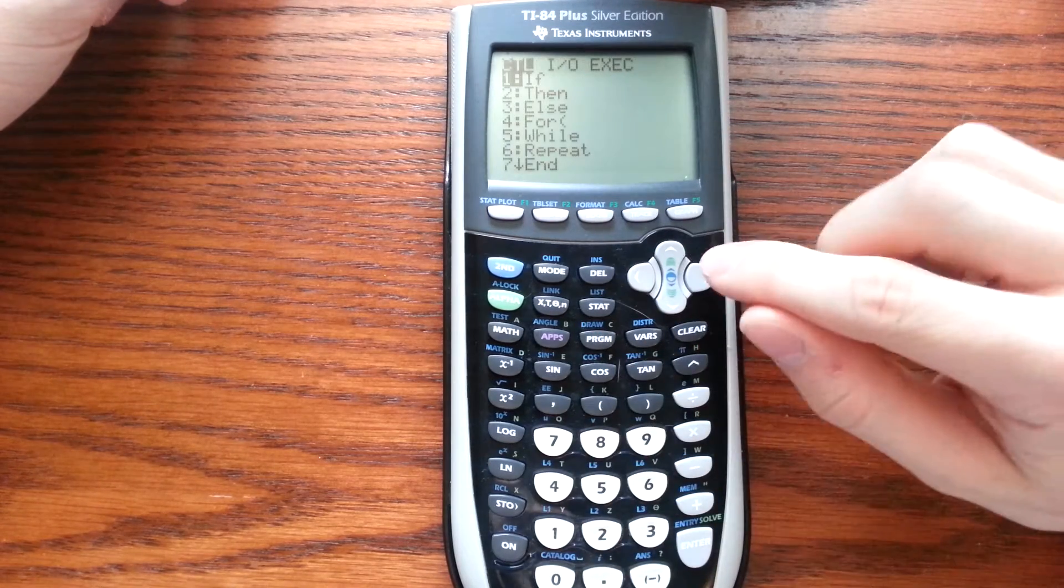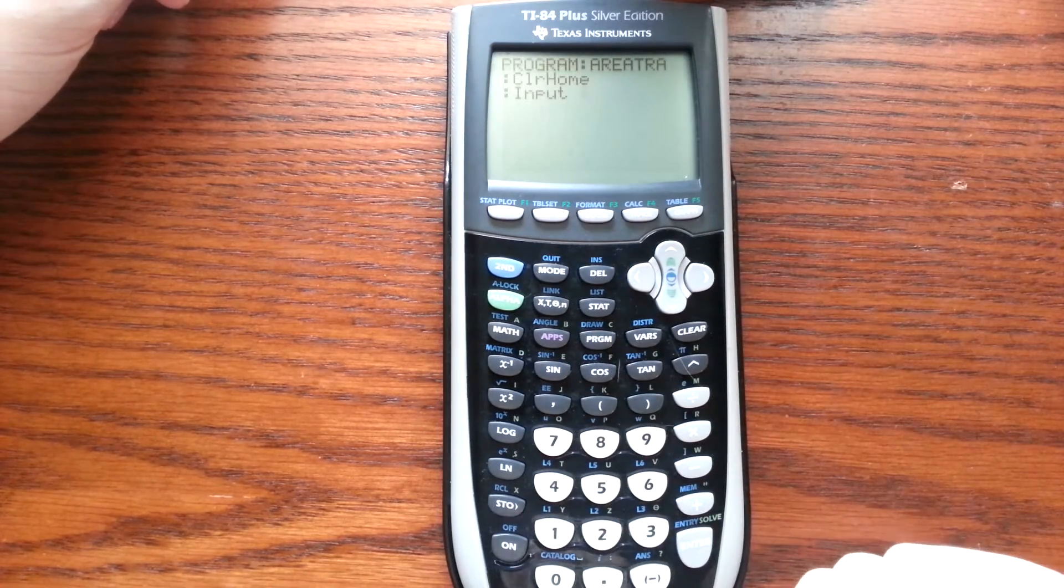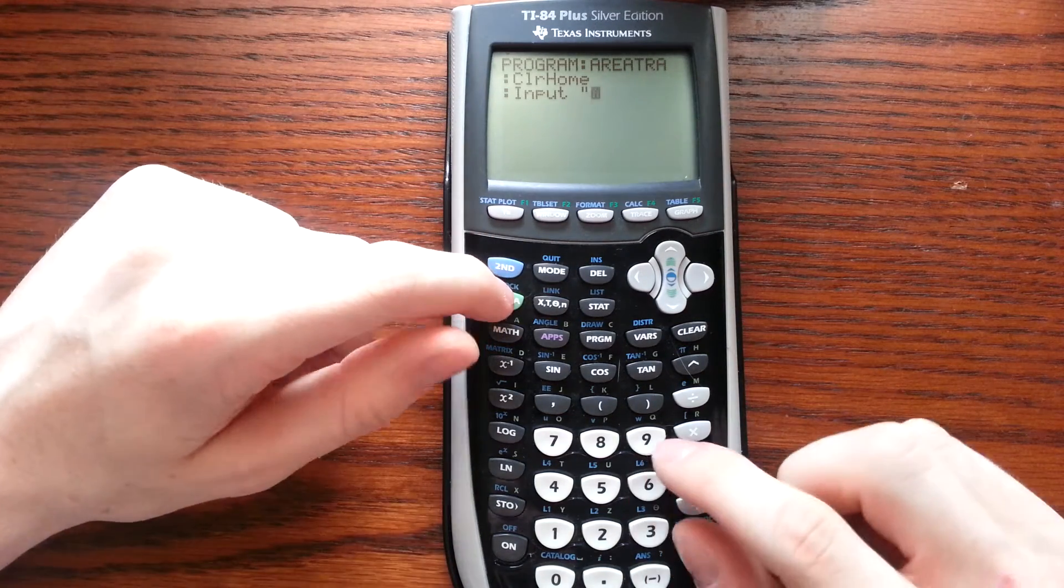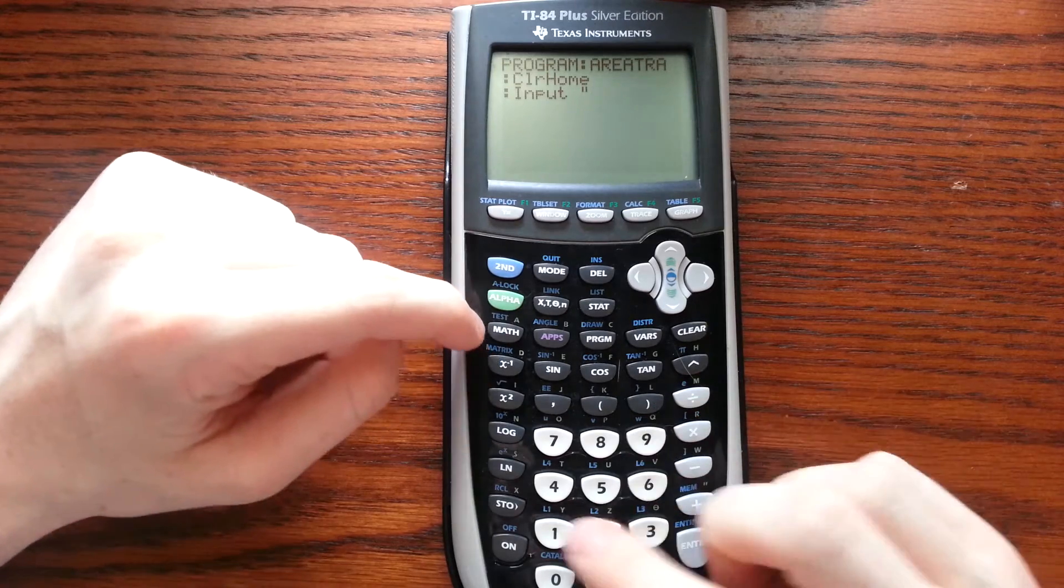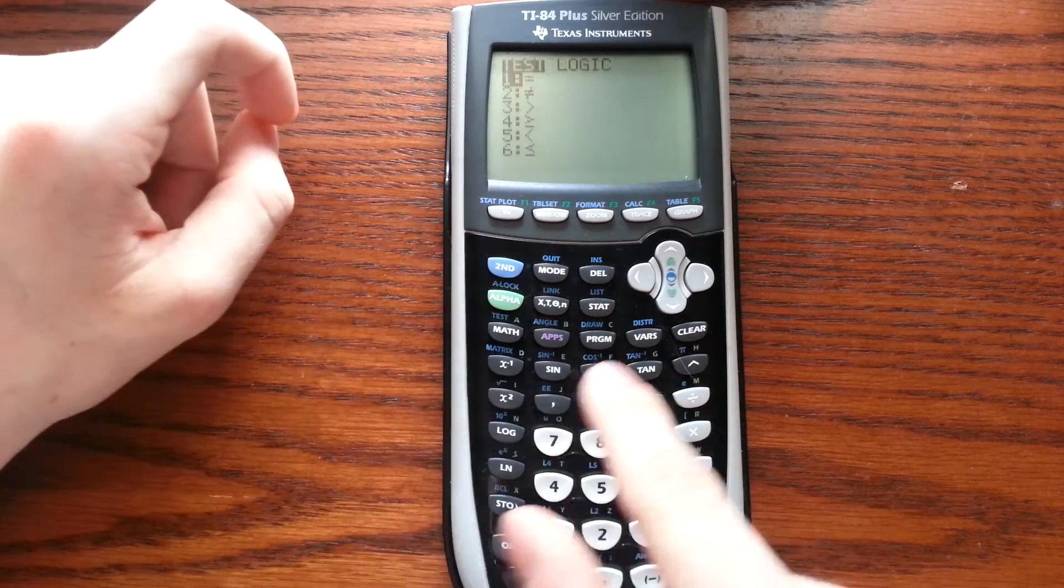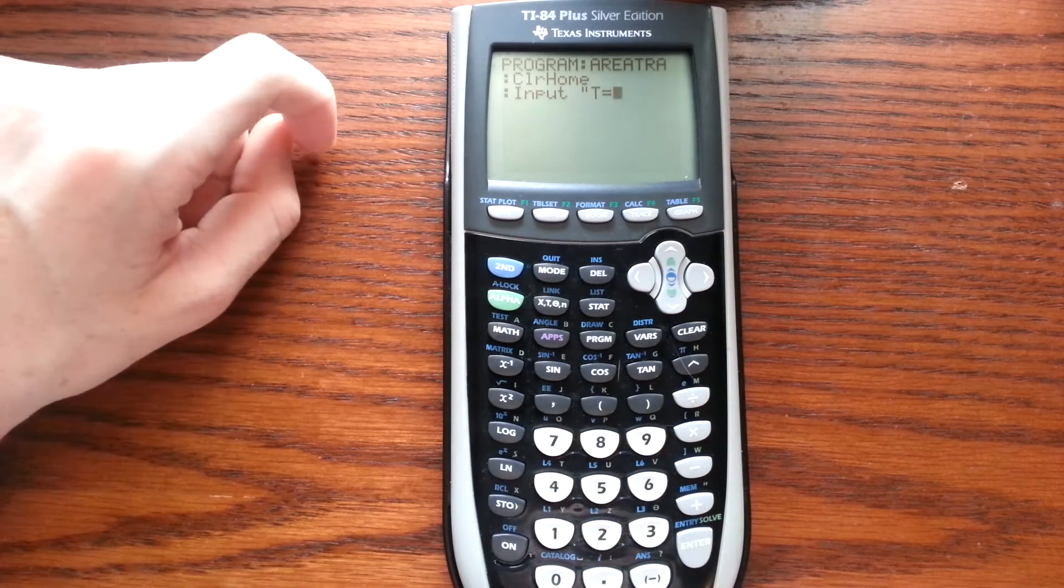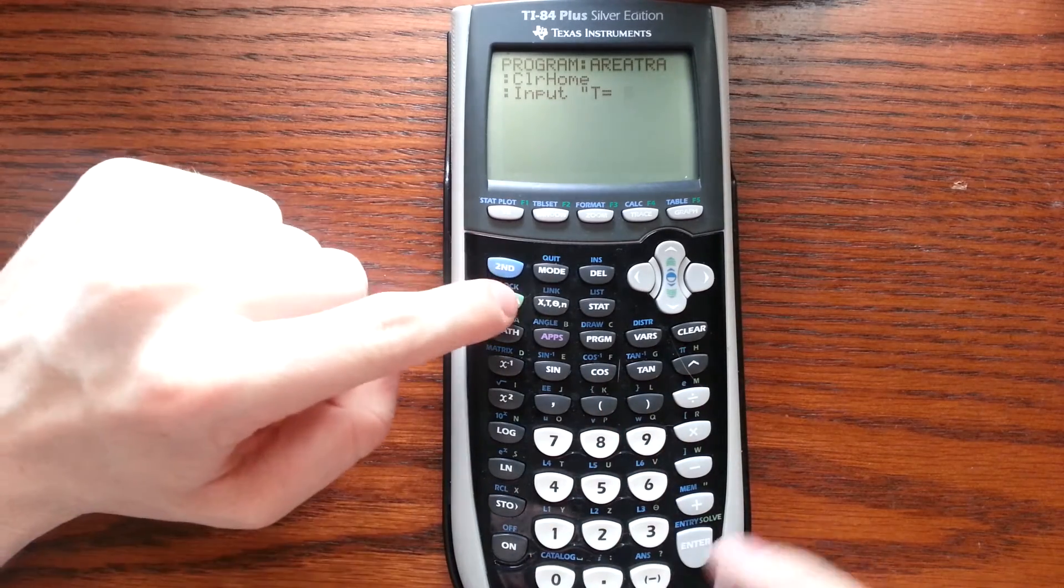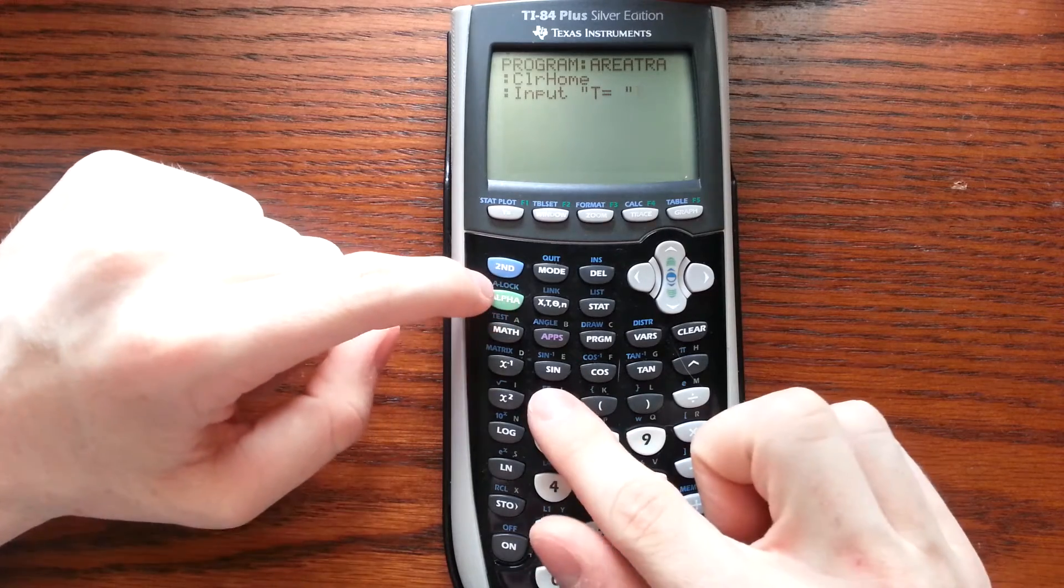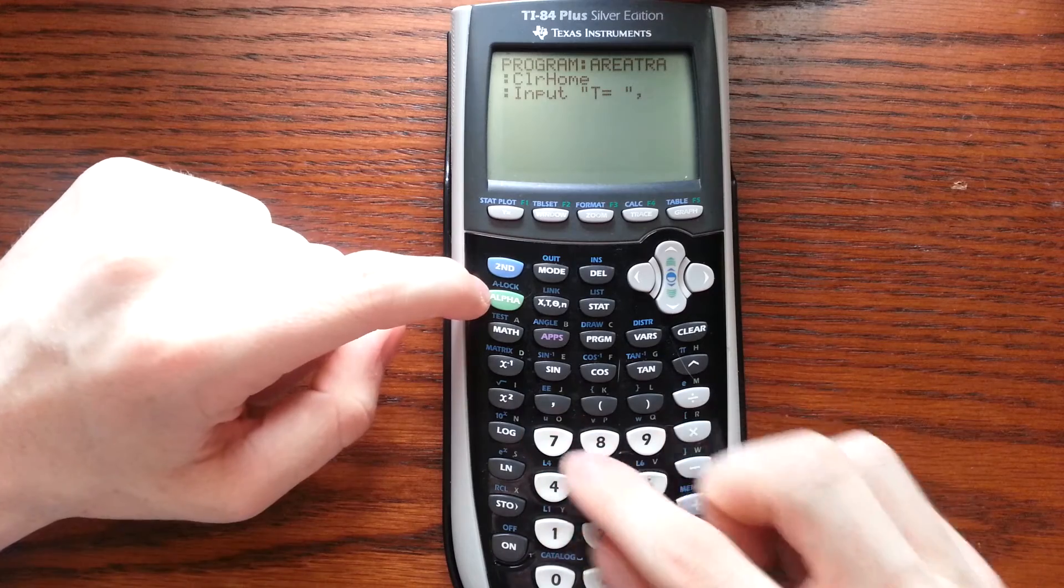Program again, Over, Input. Now here we're going to do quotations. We're going to do T equals second test equals space quotation comma T.